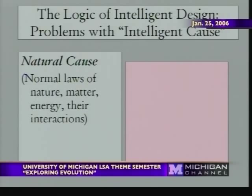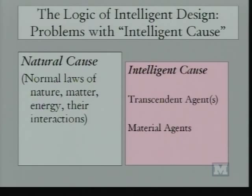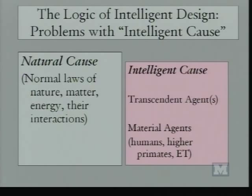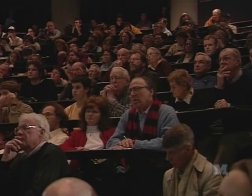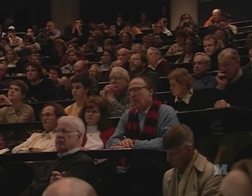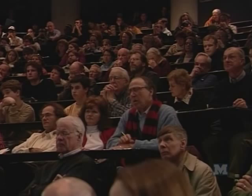Another logical problem of intelligent design is a false dichotomy between natural cause and intelligent cause. Material agents — humans, higher primates, extraterrestrials if they exist — produce intelligently designed things, and they are natural agents made of carbon that can be studied. So material agents belong on the natural side. The false dichotomy really results in only God — a transcendent agent — being the intelligent cause. We should properly refer to this as transcendent cause. Their argument is still the old creation science dichotomy: if evolution is wrong, creationism is right.